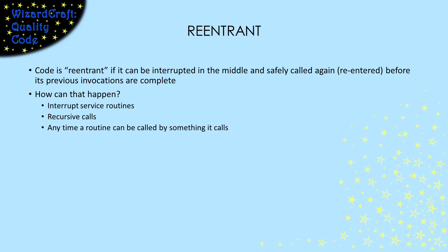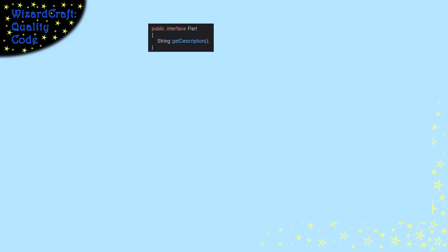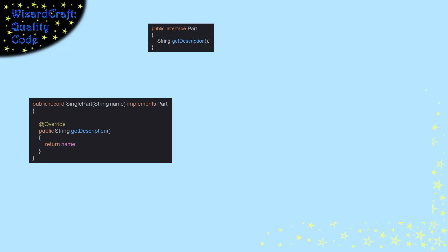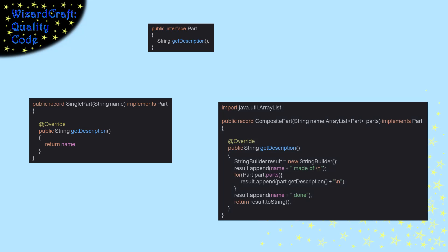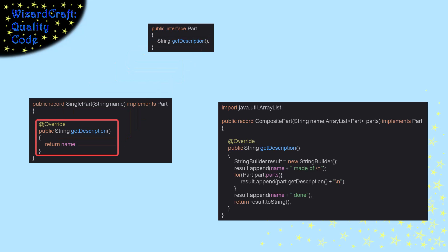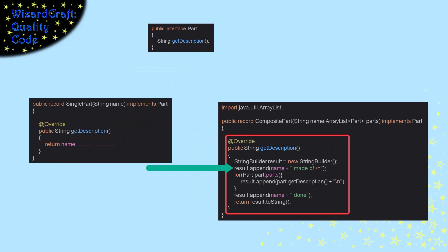Clearly, we need an example. My example uses recursion, but not in the mathy, scary way. Suppose we're going to keep track of parts of something. Some parts are simple parts — just one thing. But other parts are composite parts, meaning that they're created from a set of other parts. For this example, all we need is to build the getDescription method. For a simple part, it just gives the name of the part. For a composite part, it gives the name of the part and then the list of what the part is made of.